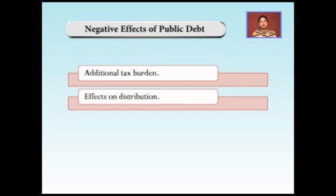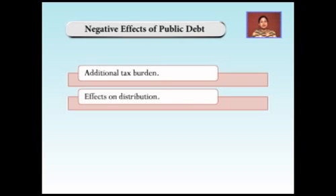Next is the effect on distribution. Public debt disturbs the distribution of income in the economy. To repay public debt, the government imposes taxes — either direct taxes, which cover fewer people from the higher class, or indirect taxes, which are paid by all people whether rich or poor. As a result, the distribution of income gets disturbed.